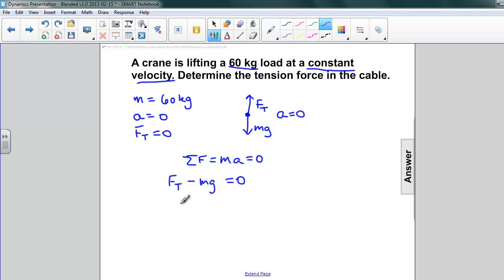And again, we can add mg to both sides, and we find that the tension force is just equal to mg. Substituting for mass and g, we get 60 kilograms times 9.8 meters per second squared.